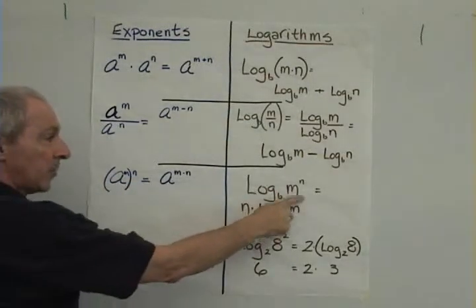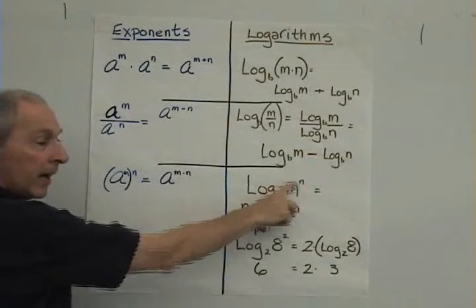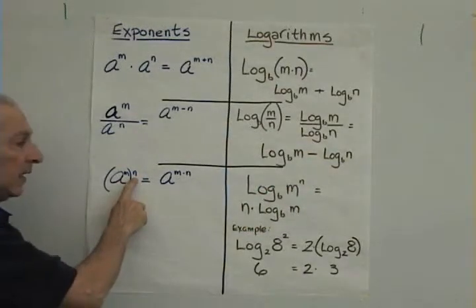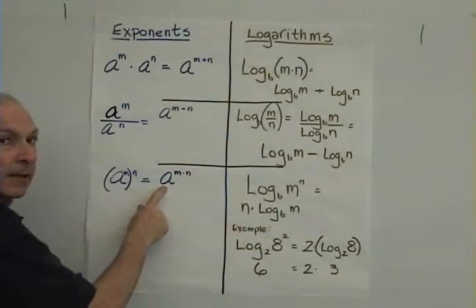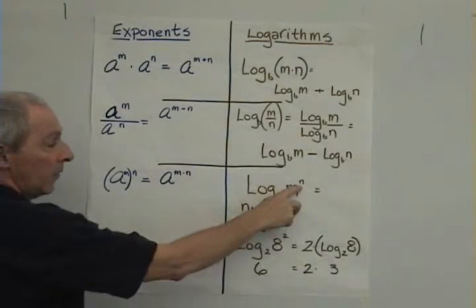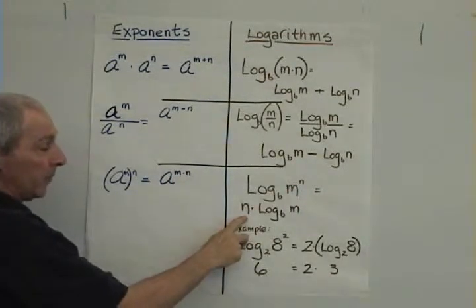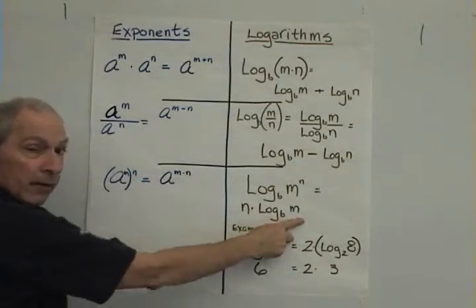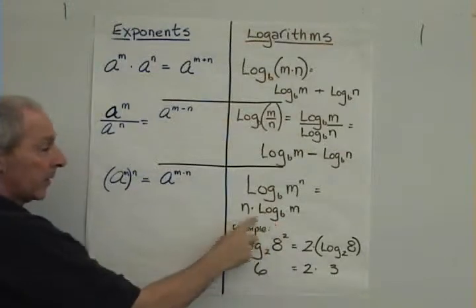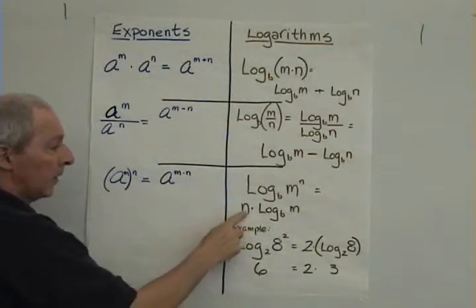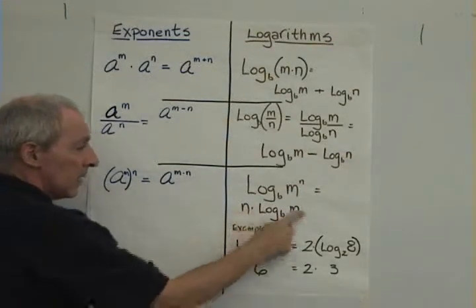And then that exponent is being raised to another exponent, like the n here. So we can simply multiply them when we're looking at exponents, and we can simply multiply them when we're looking at logarithms, because this log base b of m signifies an exponent raised to the n power, and so we have n times this exponent.